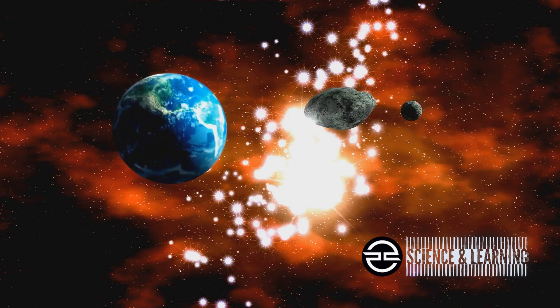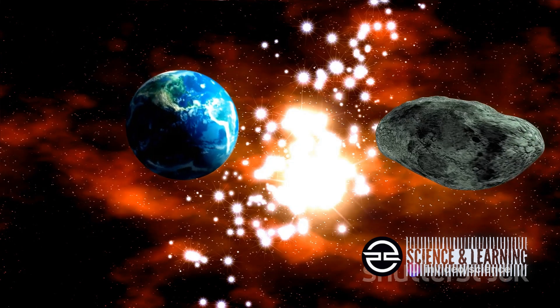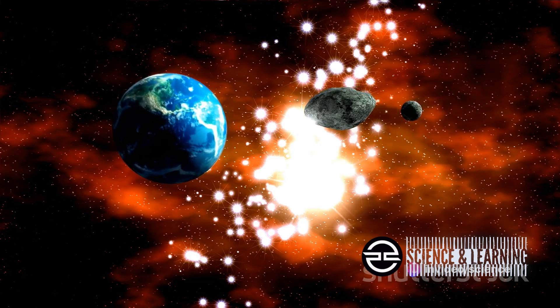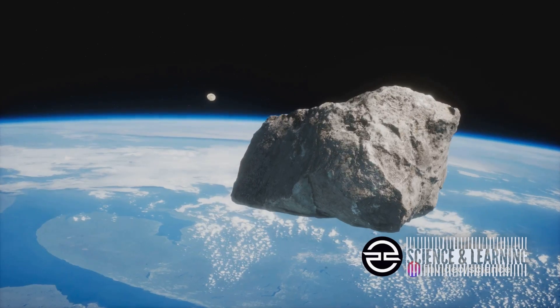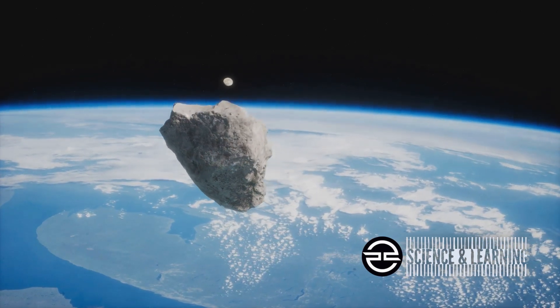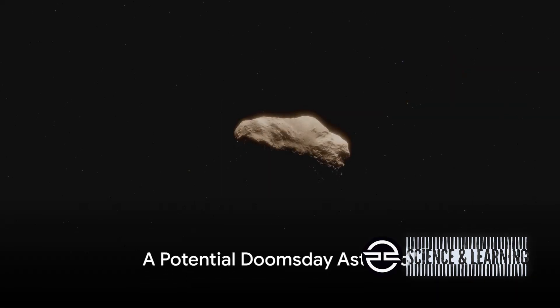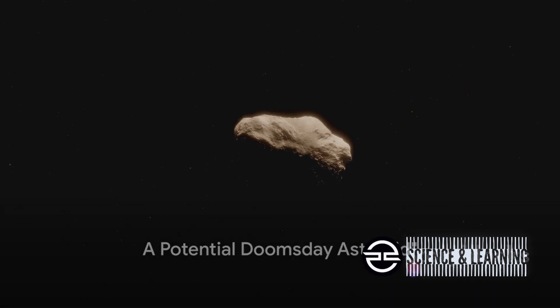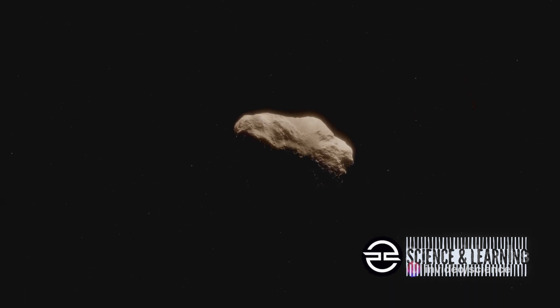Imagine 22 atomic bombs detonating simultaneously. That's the kind of impact we're talking about if Bennu collides with Earth. Now that we know about this looming threat, let's delve into when we discovered it. The year was 1999, and a new celestial body was spotted in our cosmic neighborhood, later named Bennu.